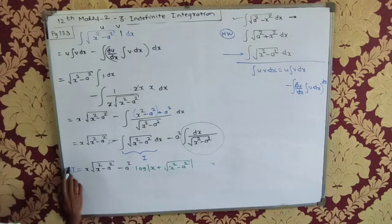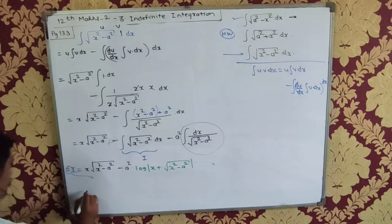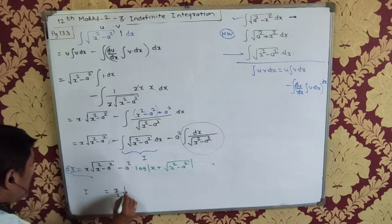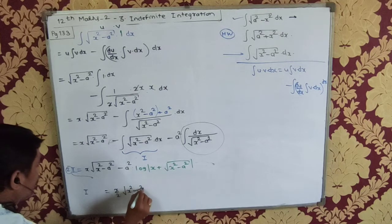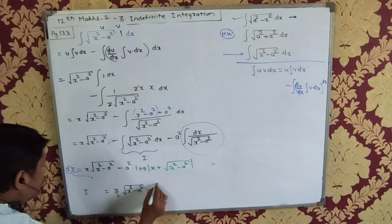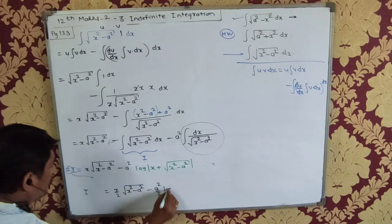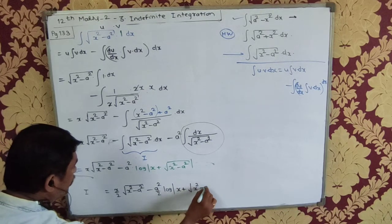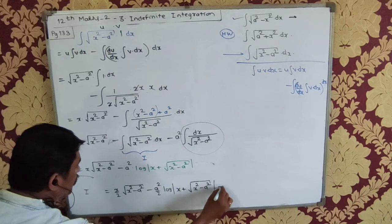Now I want i. So I will transfer these two on the other side. So this will become i equals x/2 √(x² - a²) minus (a²/2) log of x plus √(x² - a²) plus c.